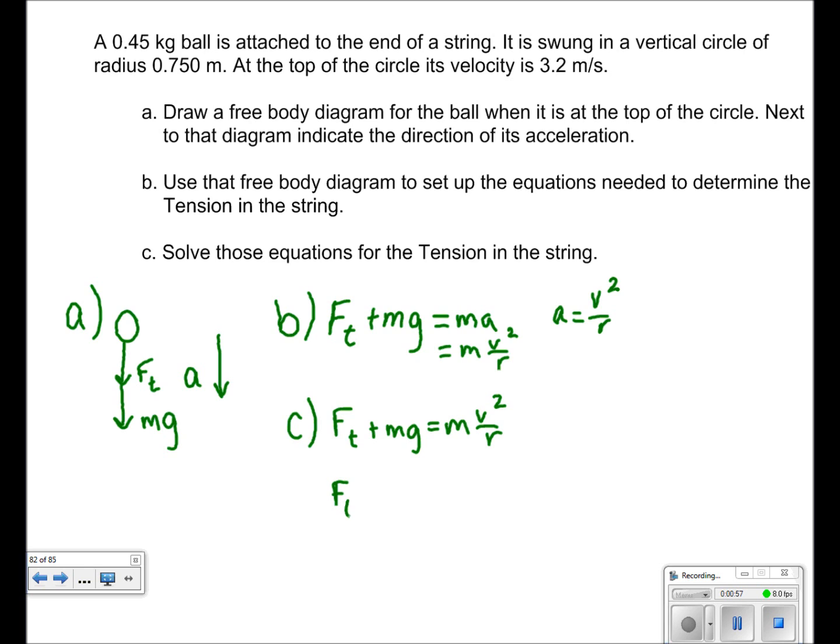To solve for Ft, we subtract mg from both sides to get mv squared over r minus mg. We can plug in the numbers